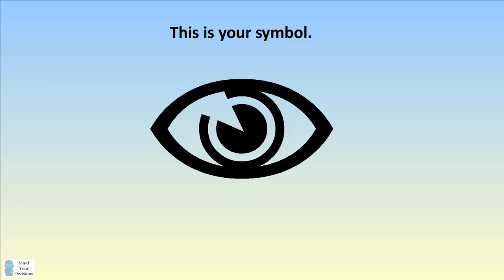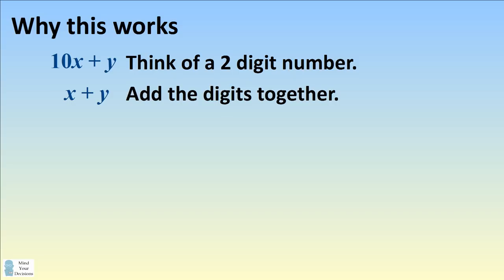Why is this? Let's go through the steps. A two-digit number can be represented by a binomial 10x plus y. When you add up the digits of the number, that becomes the number x plus y.